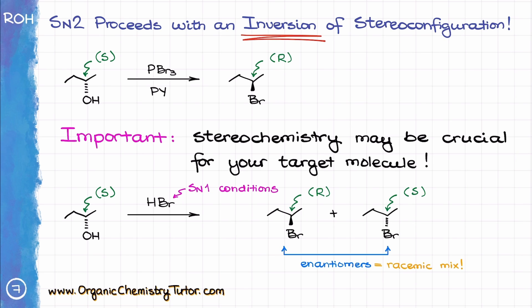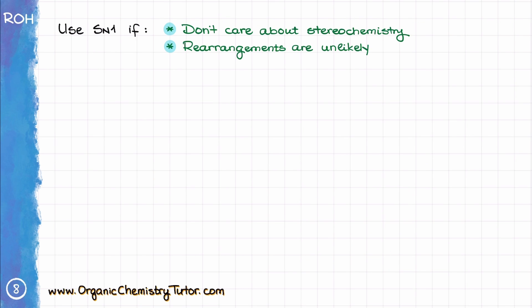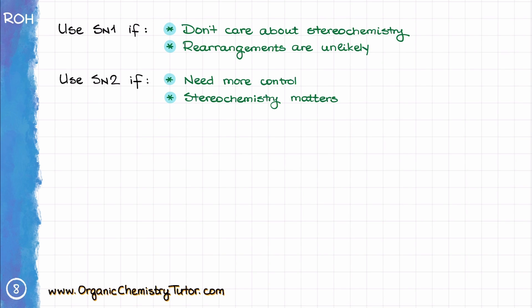So, as you can see, you can convert alcohols into alkyl halides using several different methods. If you don't care about the stereochemistry or carbocation rearrangements are not an issue, then feel free to use the SN1 methods. If you need more control over your reactions and stereochemistry is important to you, then the SN2 method is what you need. At the end of the day, the choice is going to be based on the problem you're working on. I'll warn you against making blanket statements and gravitating towards one or the other method — always analyze the molecule in front of you and make decisions based on your needs.